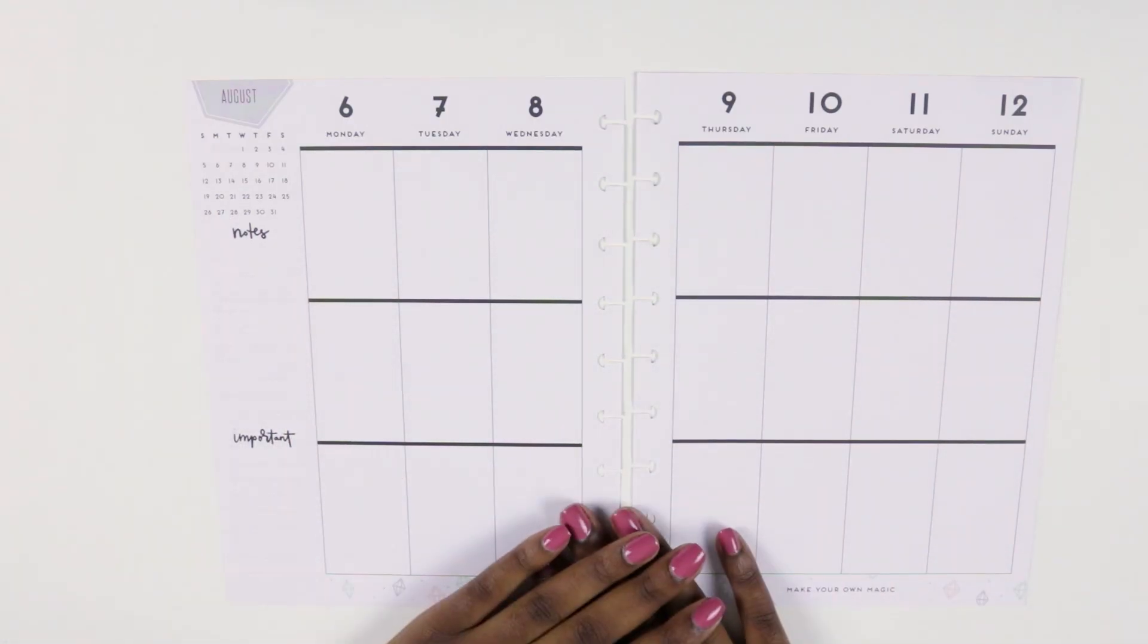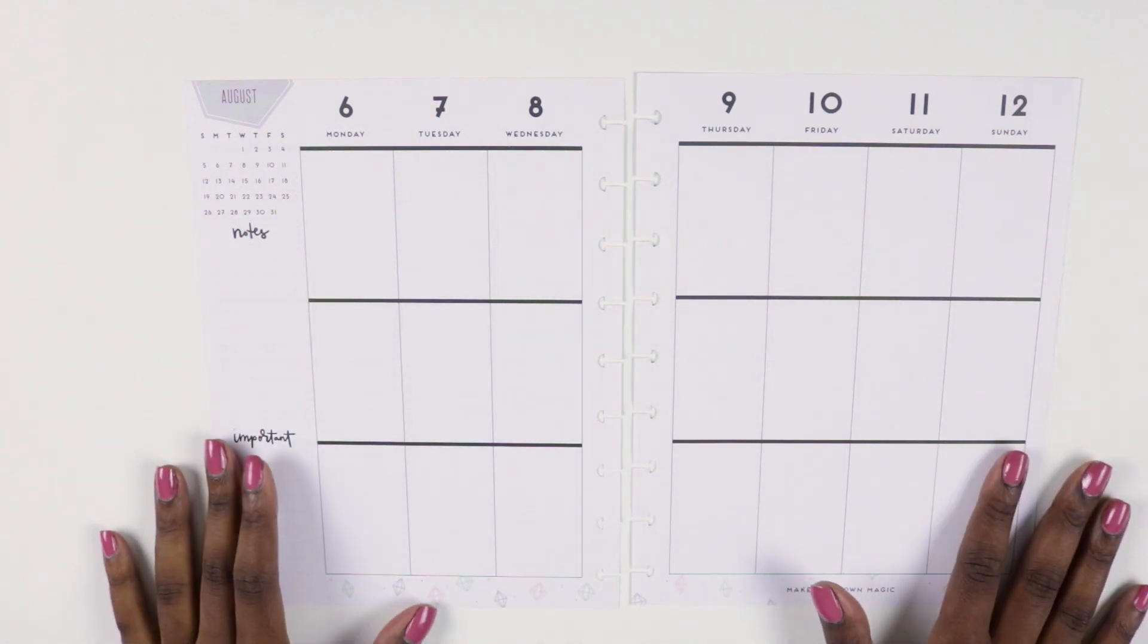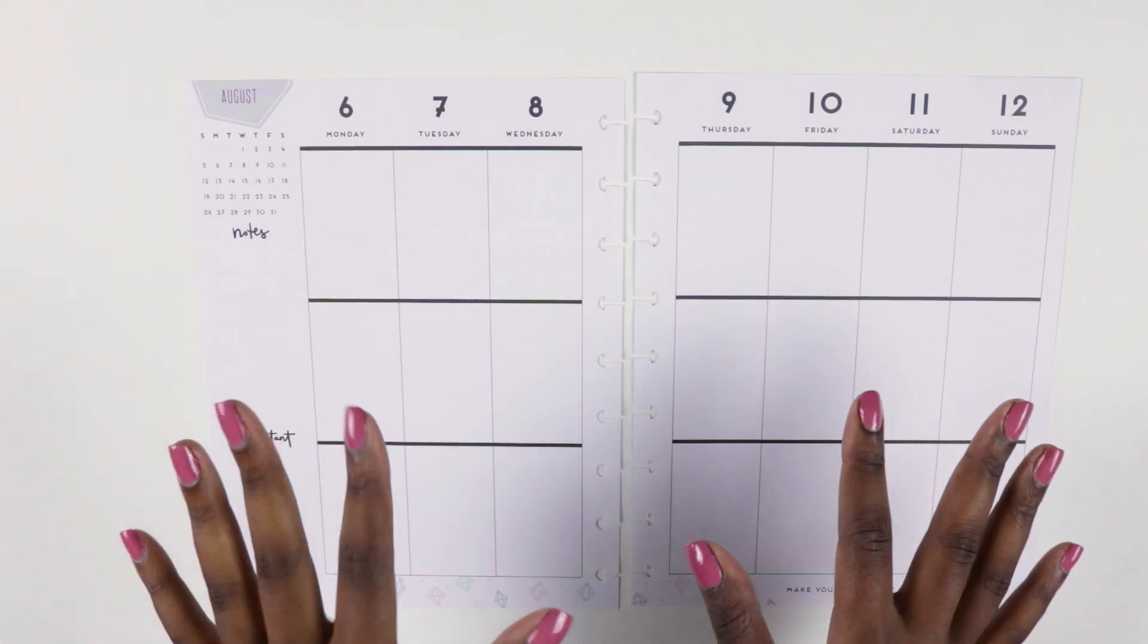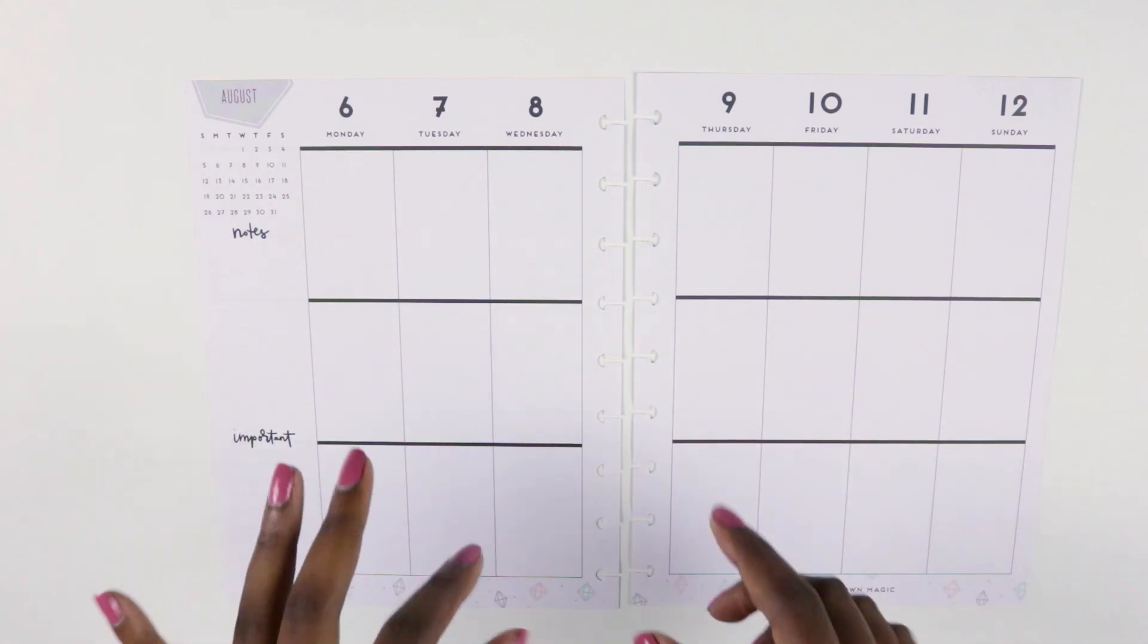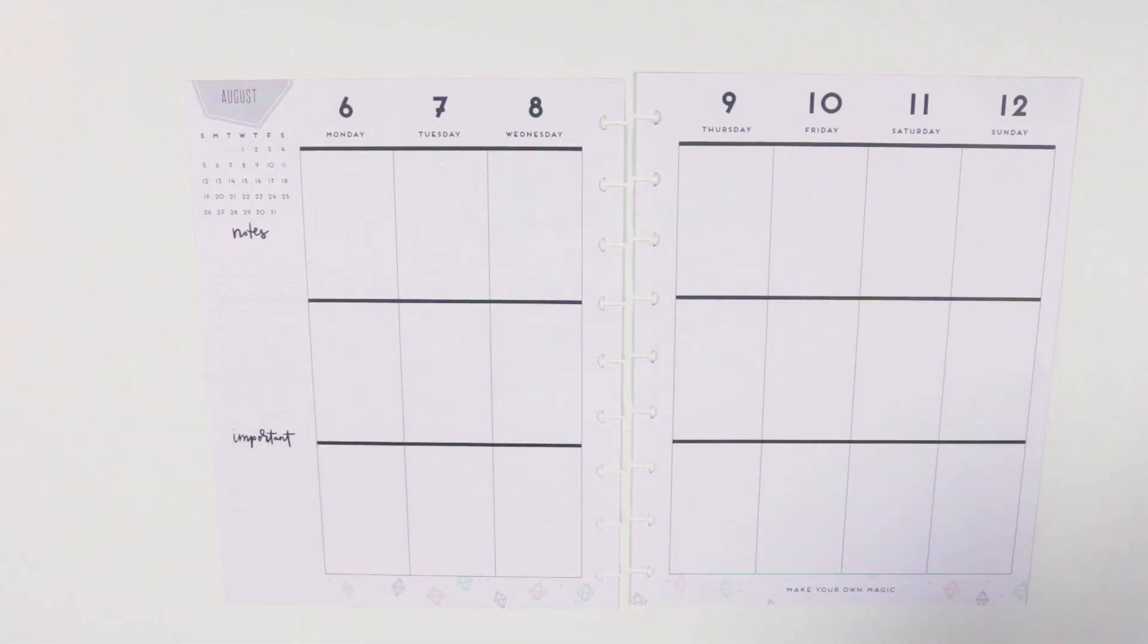Hey planner babes and welcome to my channel. This week's plan with me is for the week of August 6th through the 12th in my classic Happy Planner. The theme for this week is watermelon summer fun, so I'm going to use a mixture of reds, yellows, and greens to really make this week pop.